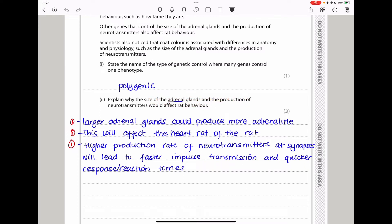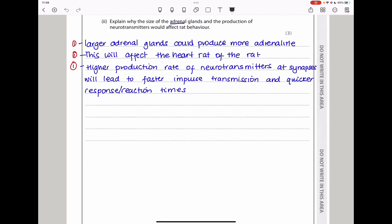Next they say, explain why the size of the adrenal glands and the production of neurotransmitters would affect rat behavior. We know that adrenal glands produce adrenaline, and adrenaline is going to prepare the body for activity. So it means if the adrenal glands are large, there is going to be production of a lot of adrenaline, and the body is going to be very active. So the heart rate is going to be higher, and so many effects that adrenaline causes are going to be intensified. If more neurotransmitters are produced, then it means that there is going to be movement or transfer of these neurotransmitters into the synapse. And the neuron after the synapse is going to receive a lot of stimulation, meaning impulses are going to be created faster. Larger adrenal glands could produce more adrenaline, and this will affect the heart rate of the rat, making it hyperactive. Higher production rates of neurotransmitters at synapses will lead to faster impulse transmission and quicker response times.